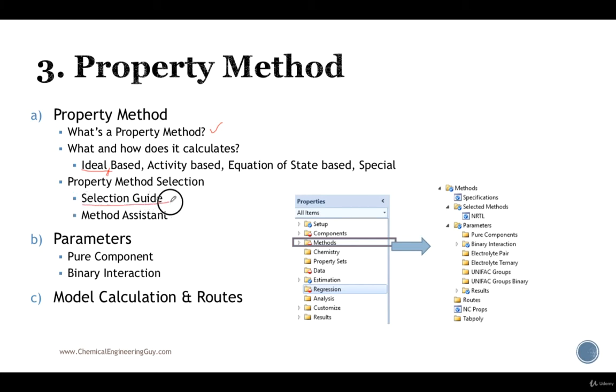We're going to use some selection guides, some rule of thumbs, in order to choose the best property methods or even using the method assistant which is included in Aspen Plus. Then we're going to talk about what's a parameter, why is it important, which type of parameters we can find in pure and binary interactions. Then we go and check out what's a model calculation, what are the different models, and the routes, which is nothing more than the way how we're going to be calculating models.